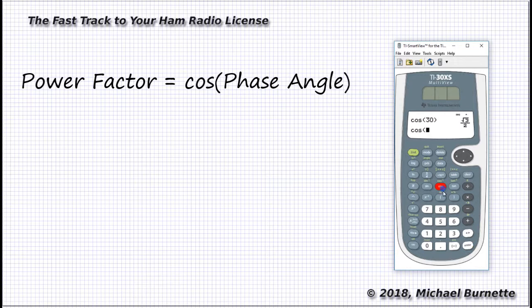But if you enter the angle as 30.0, like this, it'll tell you the power factor for a 30 degree phase angle is 0.866. You could also use the answer toggle key, right down here above the enter key, and it'll toggle back and forth between different forms of the answer.